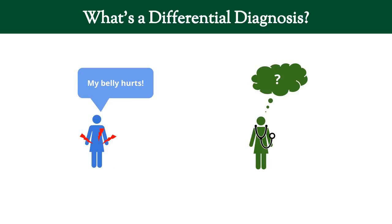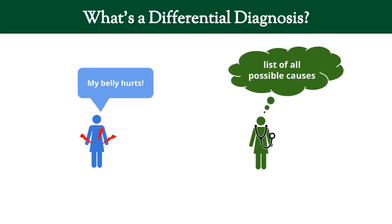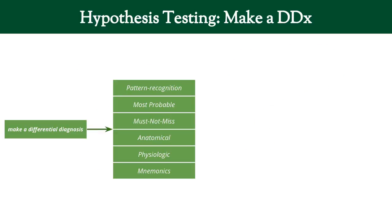So what is a differential diagnosis? It's one of the crucial aspects of clinical reasoning. If you have a patient who comes in with a chief complaint such as 'my belly hurts,' the differential diagnosis is all the possible causes for that. You need to be able to think of what could be causing it — if you can't think of it, you can't find it. If you don't look for it, you won't find it. So you need to have a good list, and how you build it is what's important.